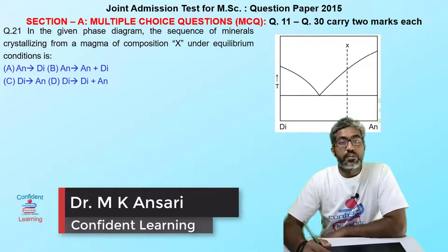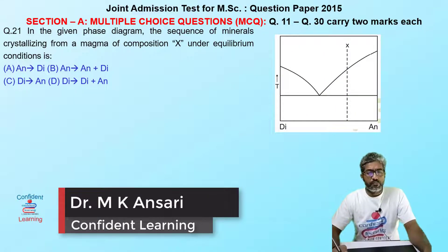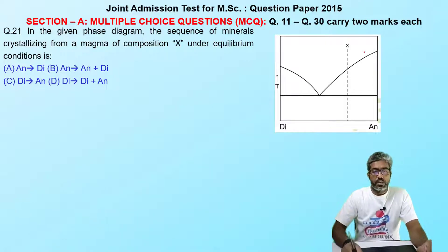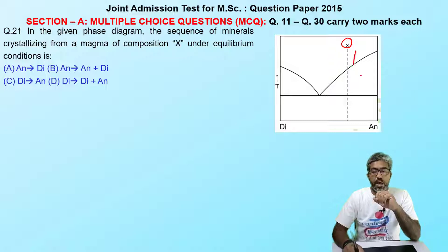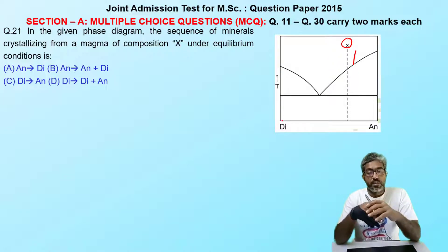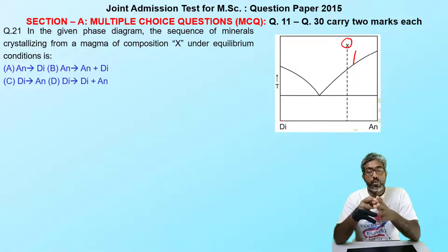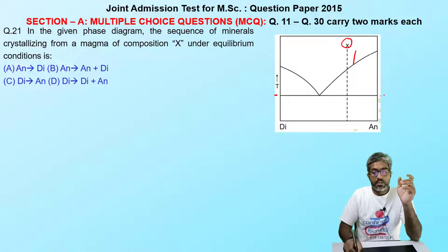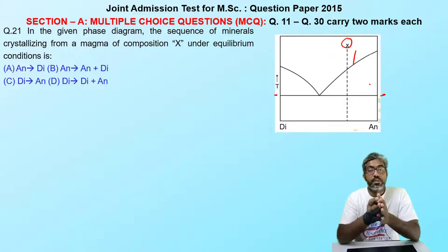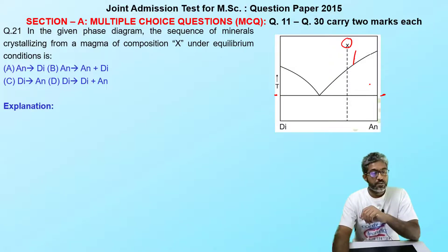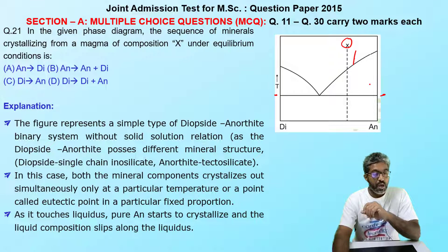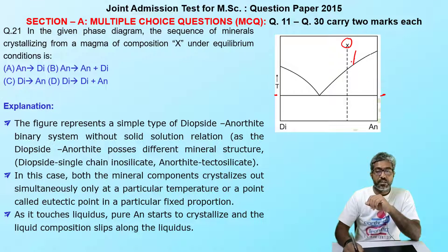This first question is related to a phase diagram, where we have one mineral known as X that just touches the liquidus. We have an orthosite-diopside two-phase system, which is not a solid solution, and it will have pure diopside at a given temperature. This is a simple binary phase diagram you will find in the Winter textbook.